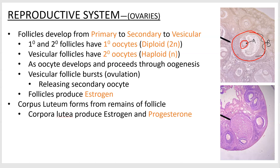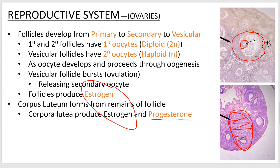When an ovary releases an oocyte, it doesn't release an egg — it releases a precursor to an egg or ovum called a secondary oocyte. So ovulation should technically be called oocytevulation. Once that oocyte is released, the follicle becomes a dense solid mass called a corpus luteum, which begins to produce progesterone. So we already made estrogen in the follicle, and then you continue making estrogen and also this new hormone, progesterone, once it becomes a corpus luteum.